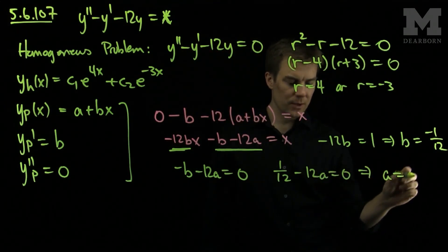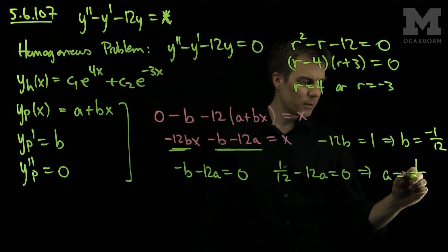Which tells me that a is 1 over 12 squared, which is 144.